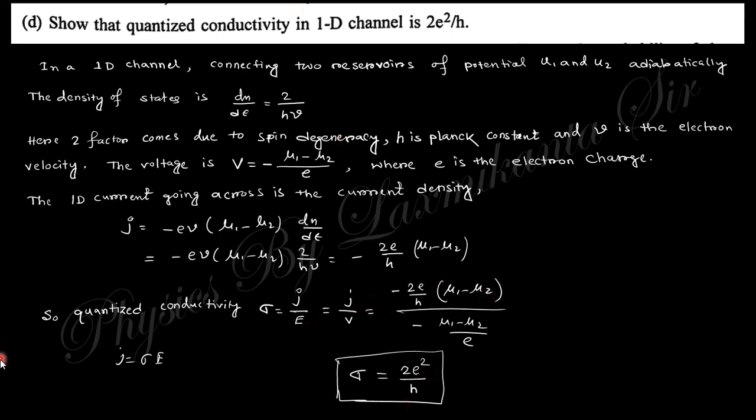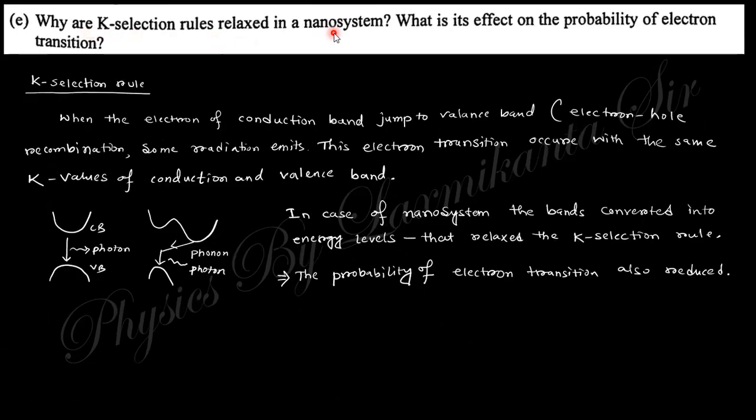Next question says: Why is k-selection rule relaxed in nano systems? K-selection rule means when electrons jump from higher energy state to lower energy state, they prefer to jump at the same k value. In case of direct band material, the electron jumps from conduction band to valence band at the same k value. But in case of indirect band, it's not same k value. That's why it releases some phonon and then makes same k value, and after that it radiates photon.